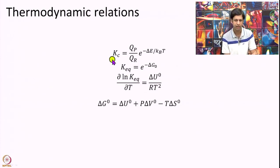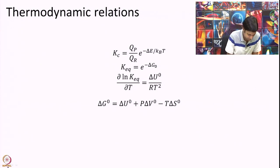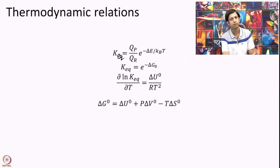One that we had already derived: K equilibrium is the ratio of partition functions into exponential of delta E over KT, where delta E is difference of potential energies. K equilibrium can be written as e to the minus delta G naught over KT. That is another relation from thermodynamics that we are not deriving, we are just stating.